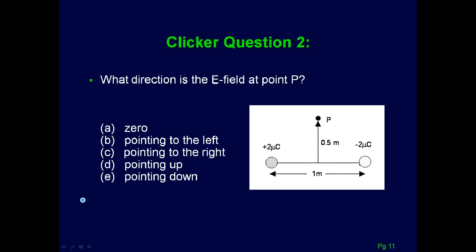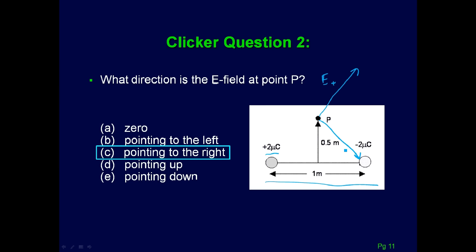Now we're going to go through an example problem you could see on a test. We have two point charges: one positive 2 microcoulombs and one negative 2 microcoulombs, arranged as in this diagram. The first question is: what direction is the electric field at point P? The electric field from the positive charge points something like this, and the one from the negative charge points something like this. The up and down parts cancel, and these two add together to point to the right.